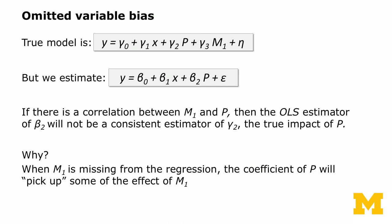In this case, if m1 and the participation decision are correlated, then the OLS estimator of beta_2 — the effect of participation on the outcome — will not be a consistent estimator of gamma_2, which is the true impact of the program. When m1 is missing from the regression, the coefficient of p will pick up some of the effects of m1, so the estimate is not precise. That's the first problem.